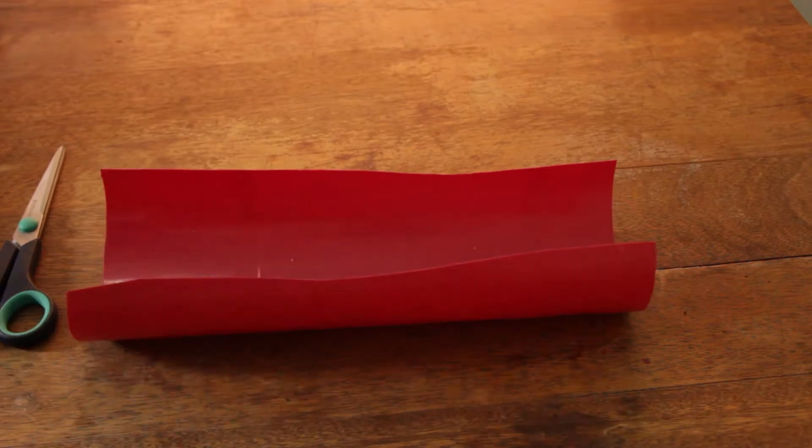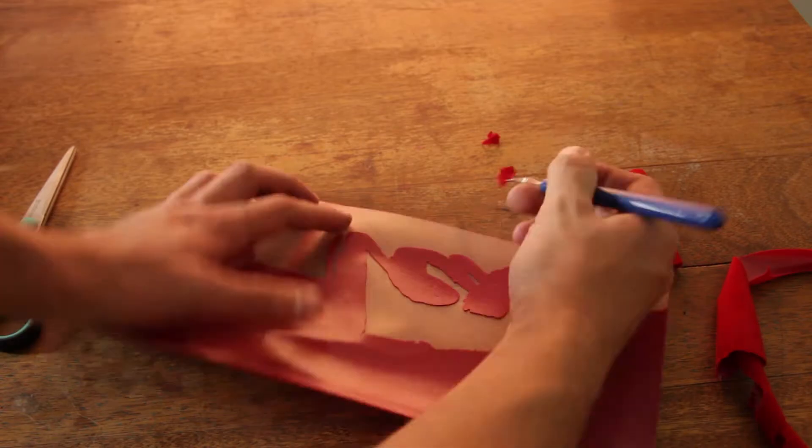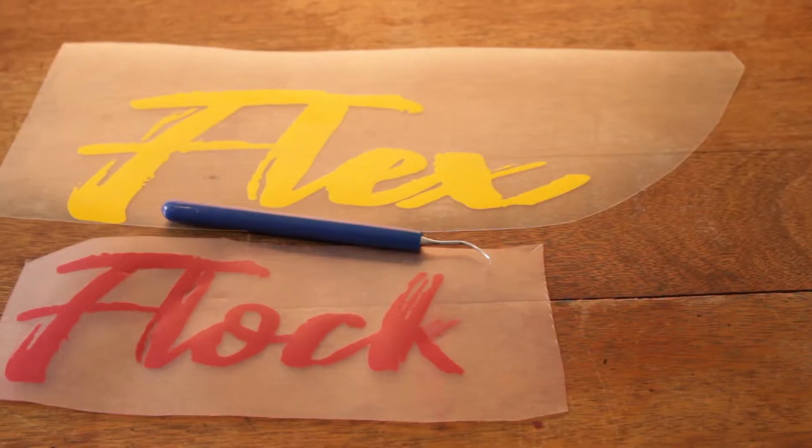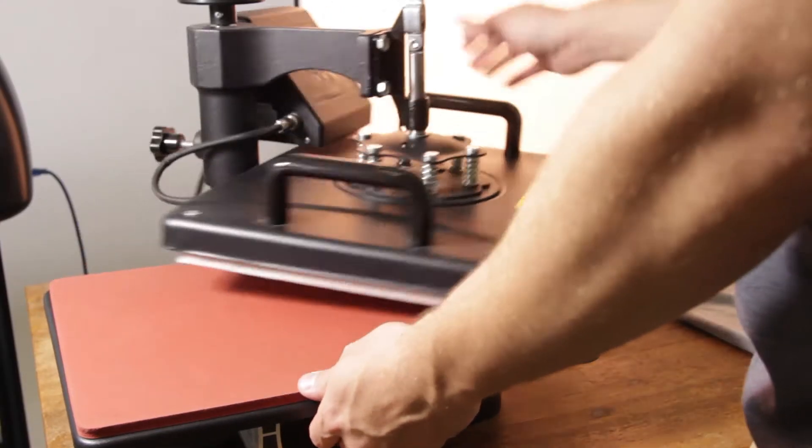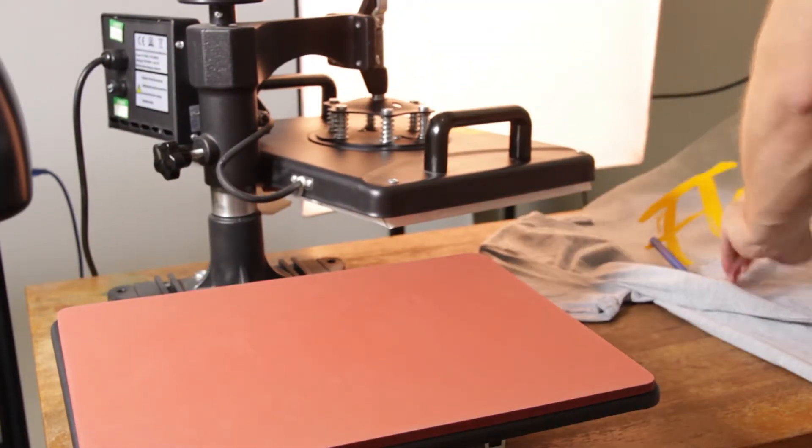Next you want to start weeding. This may be the most time consuming part of the whole process. Once that is completed, you can place your shirt on the heat press platform.